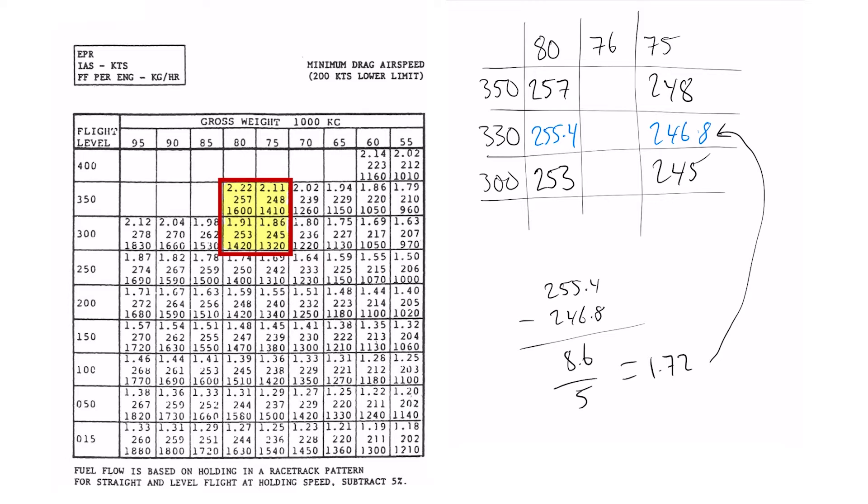So the exact number this gives me is 248.52. This is the number that I'd round to the nearest whole number so I'd be writing 249 as my airspeed in this case.